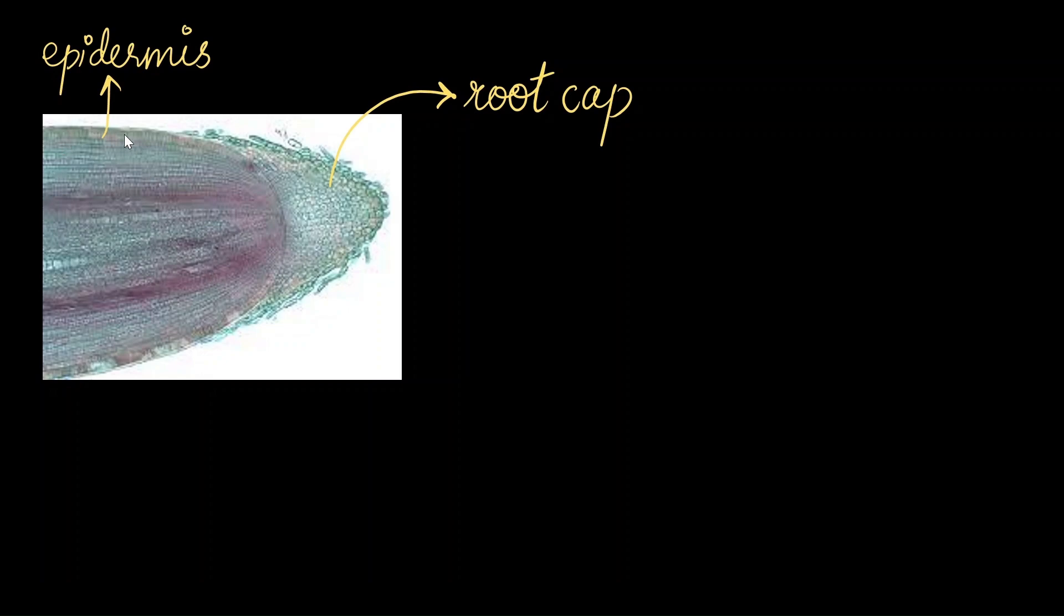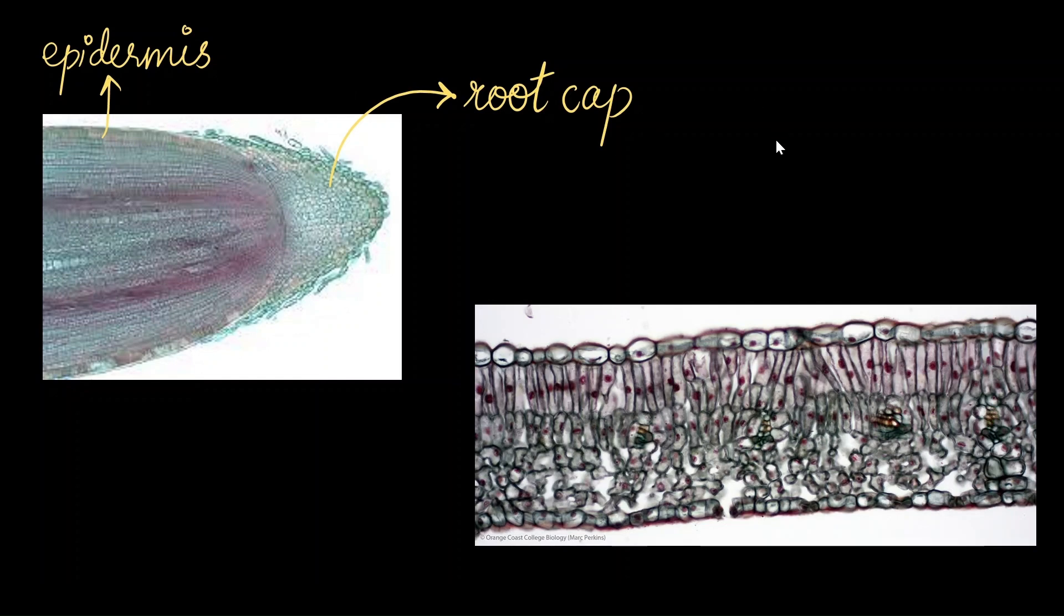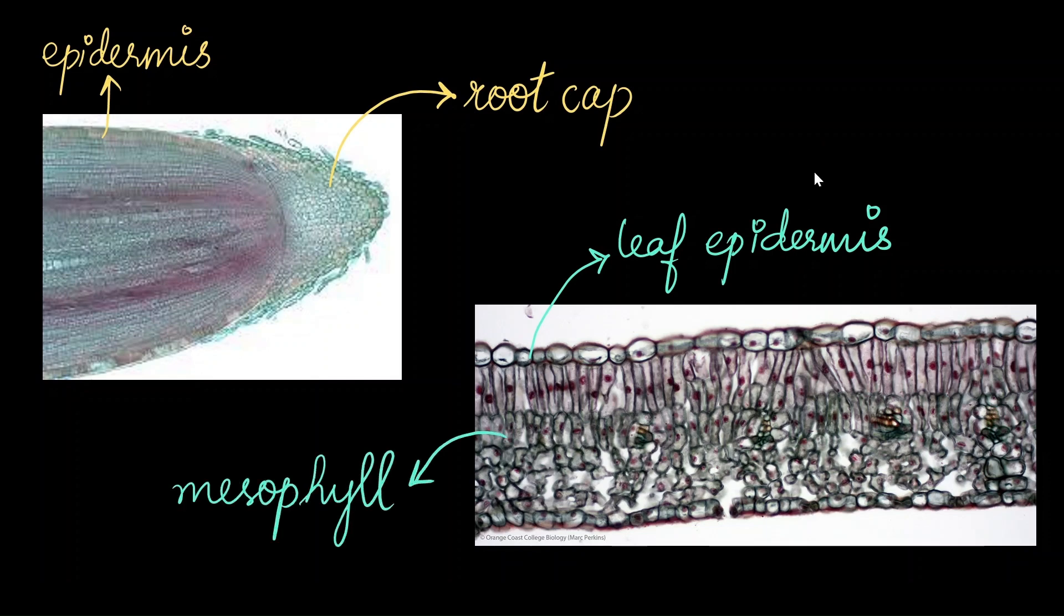Similarly, when you look at the cross-section of a leaf, the cells that are towards the outside form the leaf epidermis, and the cells towards the inside form the mesophyll. We can conclude that the location of the cells decide the fate of the cells.